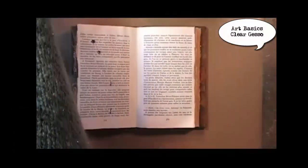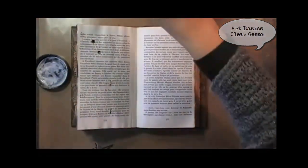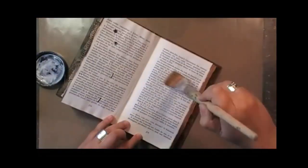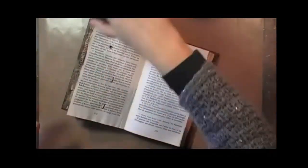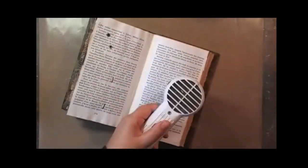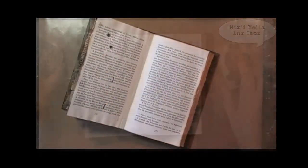I'm working in my altered book today and for the first layer I'm applying a tiny bit of clear gesso just on one spot that I want to keep clear when journaling further on.